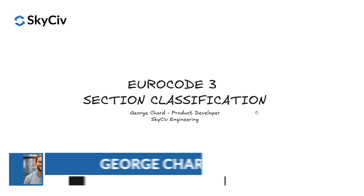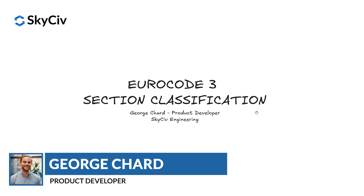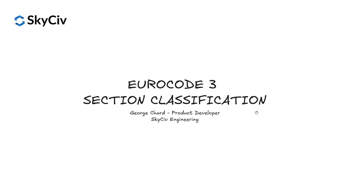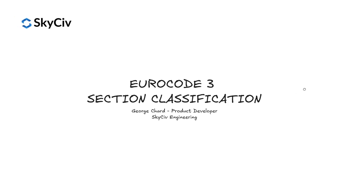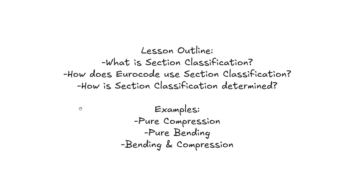Hey everyone, it's George from SkySiv here and in today's video we're going to be learning all about section classification in Eurocode 3 for the design of structural steel sections. In today's lesson we're going to learn all about what section classification is, how Eurocode uses section classification in calculating section resistance values, and how we can calculate the section classification for different steel shapes. At the end of the lesson we'll also run through some worked examples for a section in pure compression, pure bending, and combined bending and compression.